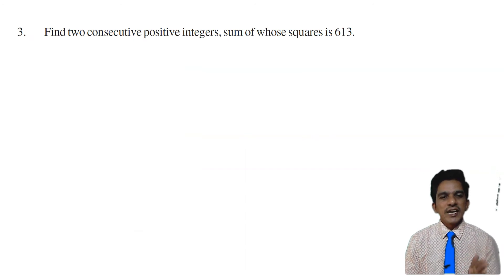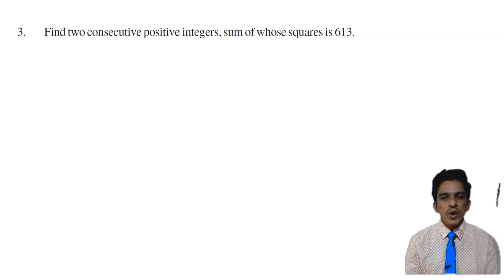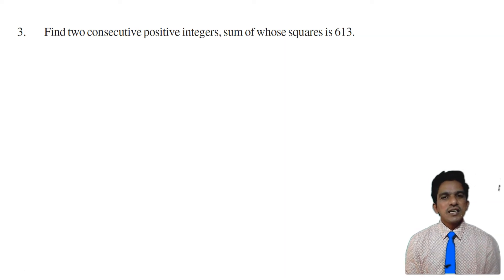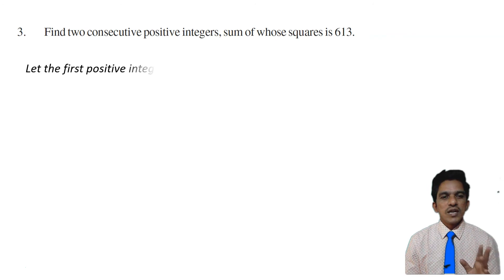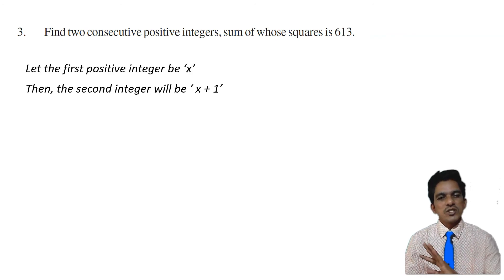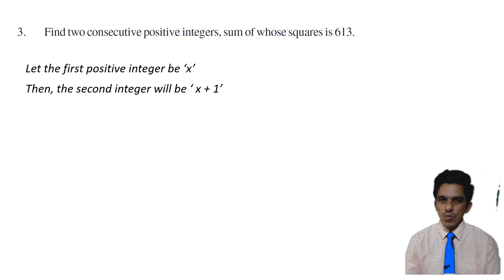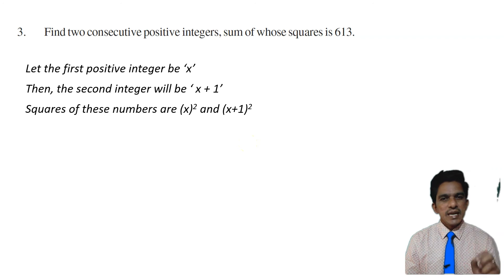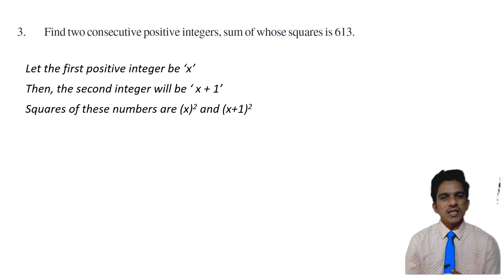Now look at question number 3: Find two consecutive positive integers, sum of whose squares is 613. We have to find two positive integers such that when you square them and add, you get 613. Let the first positive integer be x. Then the second positive integer will be x plus 1. The sum of squares is x squared plus (x plus 1) whole squared, and we are given that this equals 613.